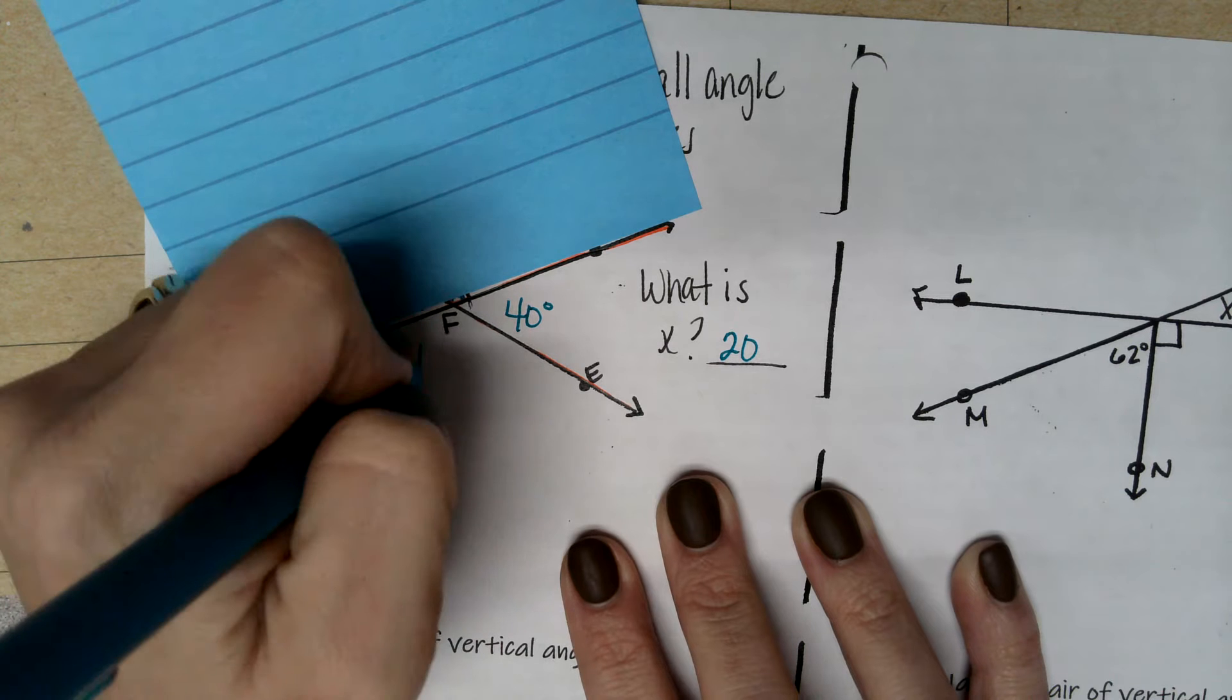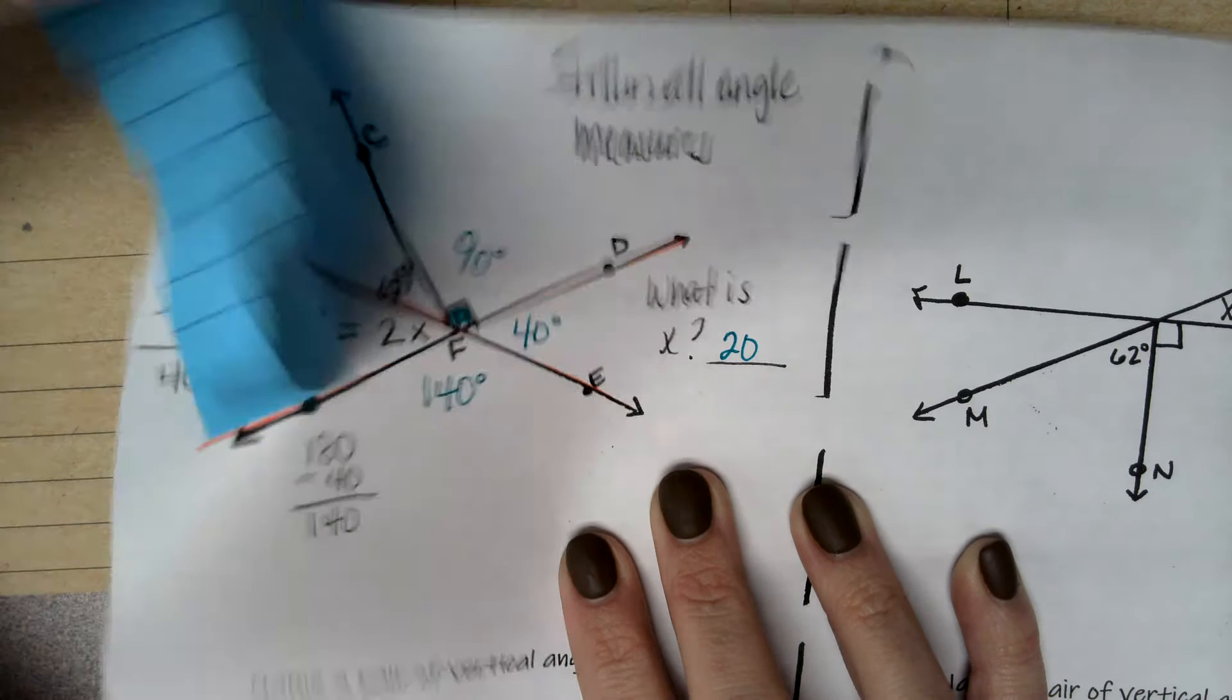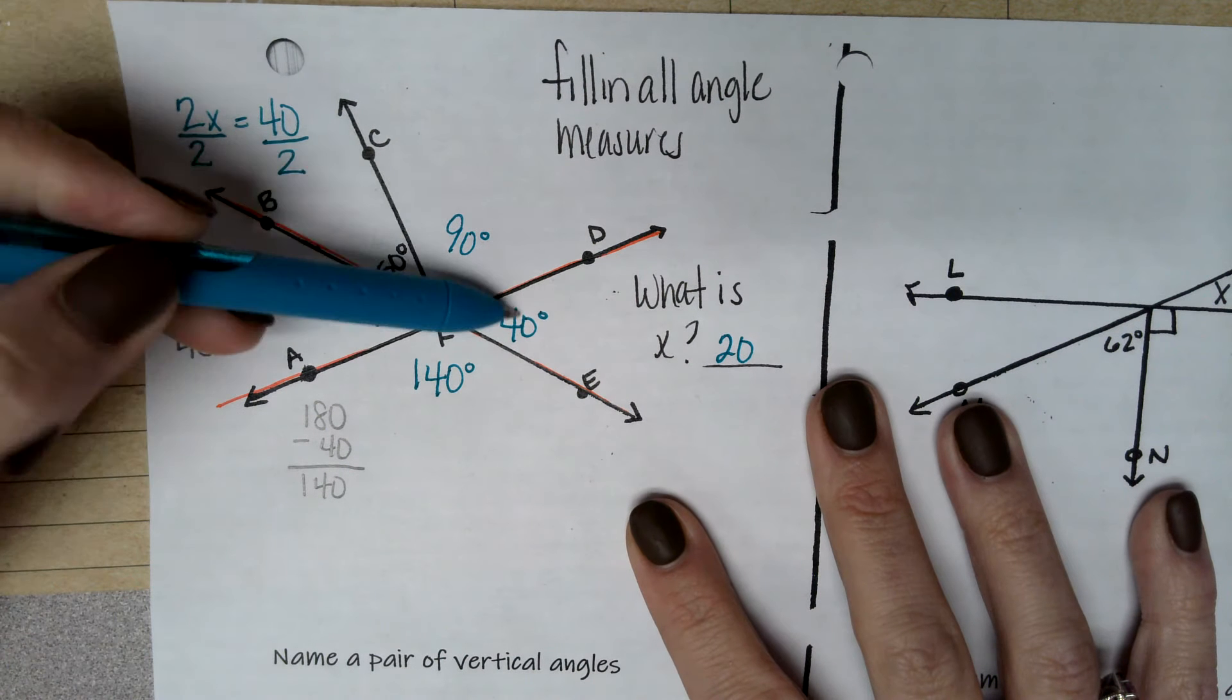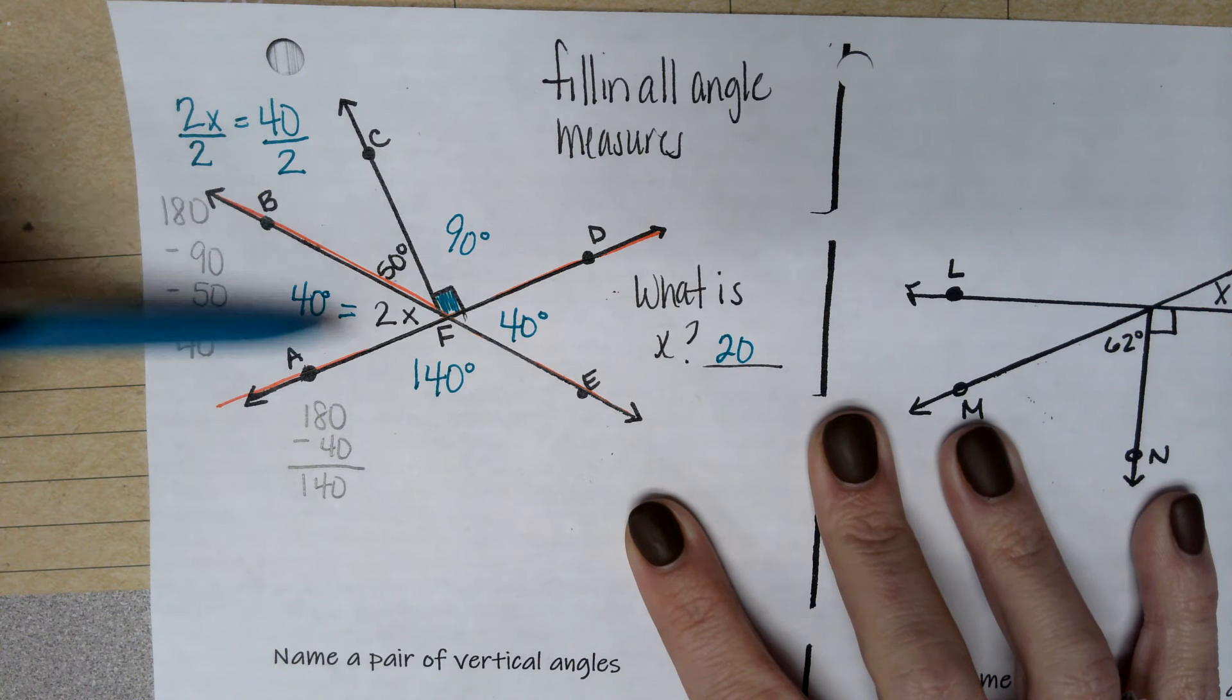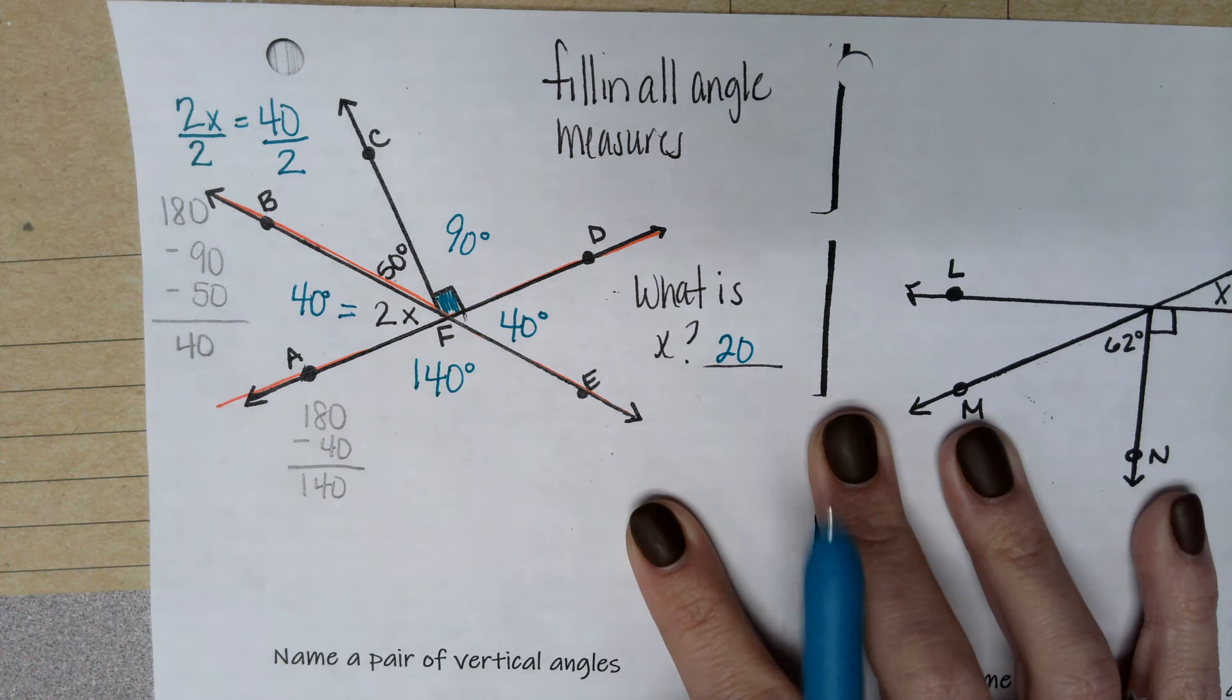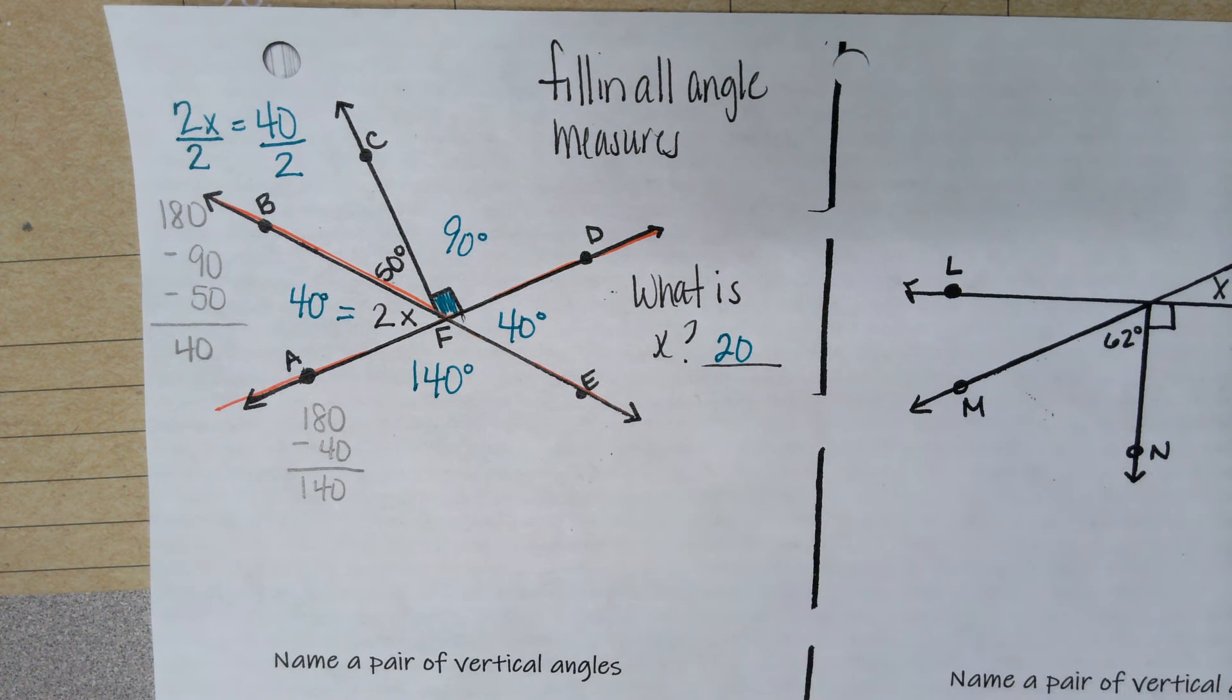So that means that this angle measure here is 140 degrees. Now when I uncover it all, if you look, we have all of these angles now labeled. And this is the goal for this homework assignment. Fill in all of the angle measures and then tell me what is the value of x. Please feel free to re-watch this video as many times as you need to help you with this homework. I hope you have a wonderful evening.